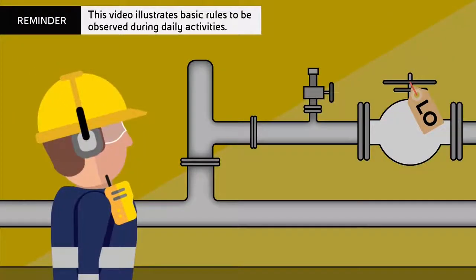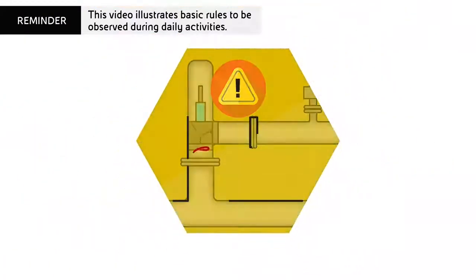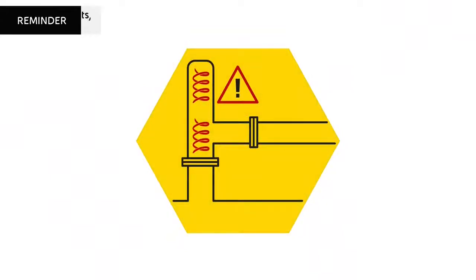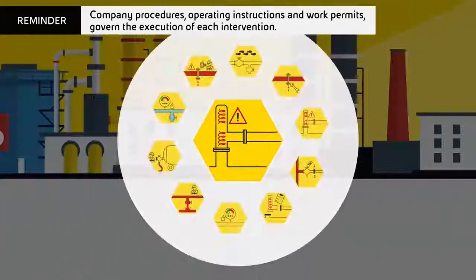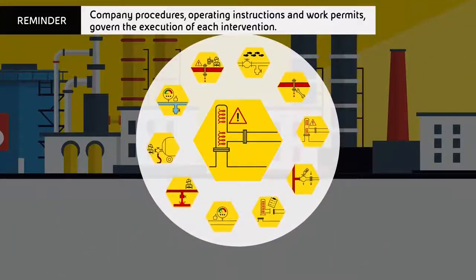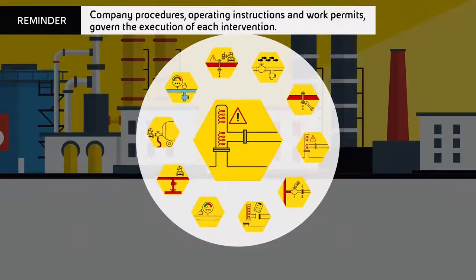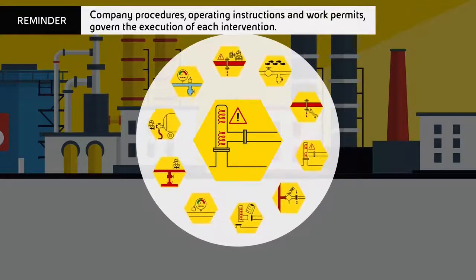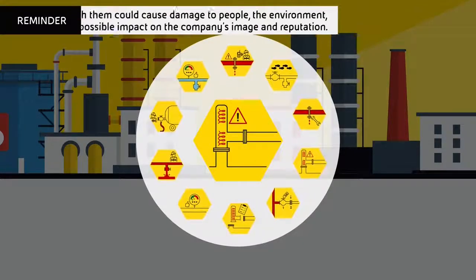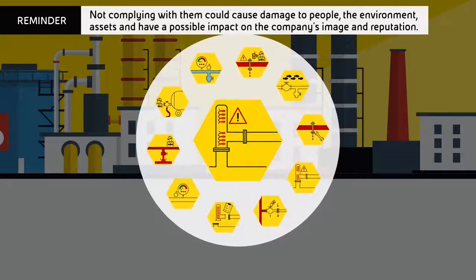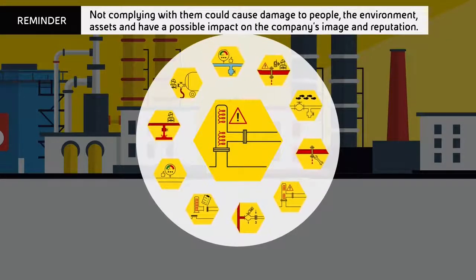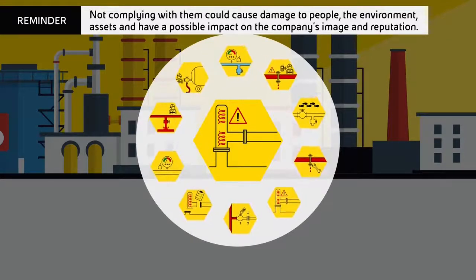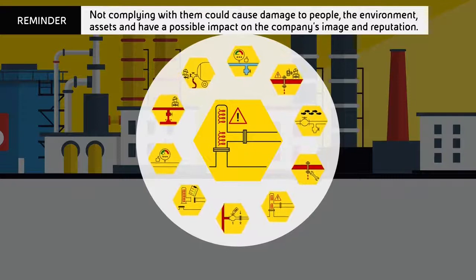This video illustrates basic rules to be observed during daily activities. Company procedures, operating instructions and work permits govern the execution of each intervention. Not complying with them could cause damage to people, the environment, and assets, and have a possible impact on the company's image and reputation.